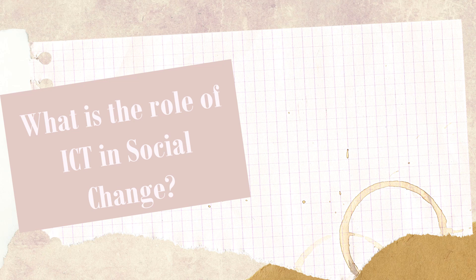The role of ICT in social change — information and communication technology — can play a significant role in bringing about social change in many ways. For instance, increased access to information: ICT has the potential to increase access to information and knowledge that can be used to address social issues. People in remote areas can use the internet to access health information or learn about their rights.